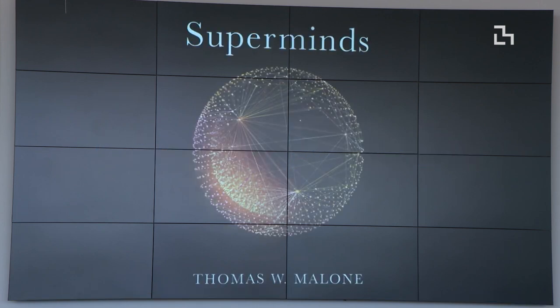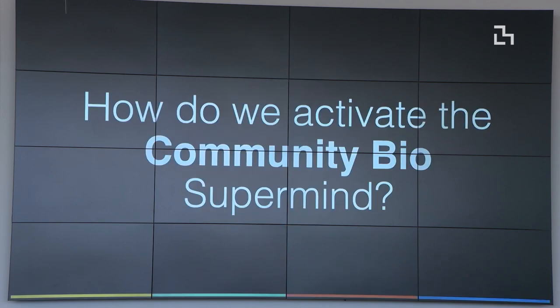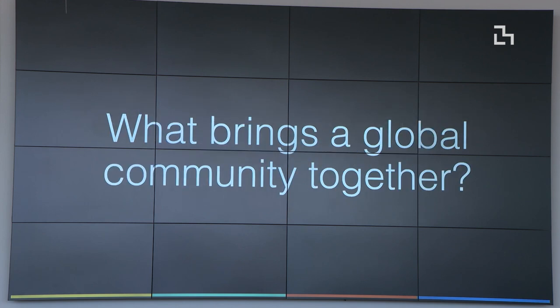Tom Malone, a close collaborator at the Center for Collective Intelligence at Sloan School, has a framework I really like called 'superminds.' You can imagine this room could be a supermind. This whole field of wearable biotechnology and global interfaces could be a supermind. In the case of community bio, how do we ultimately activate this supermind? What brings a global community together? It's not a hierarchy — there's no CEO, no dictator. You have to have some way to bring communities together.